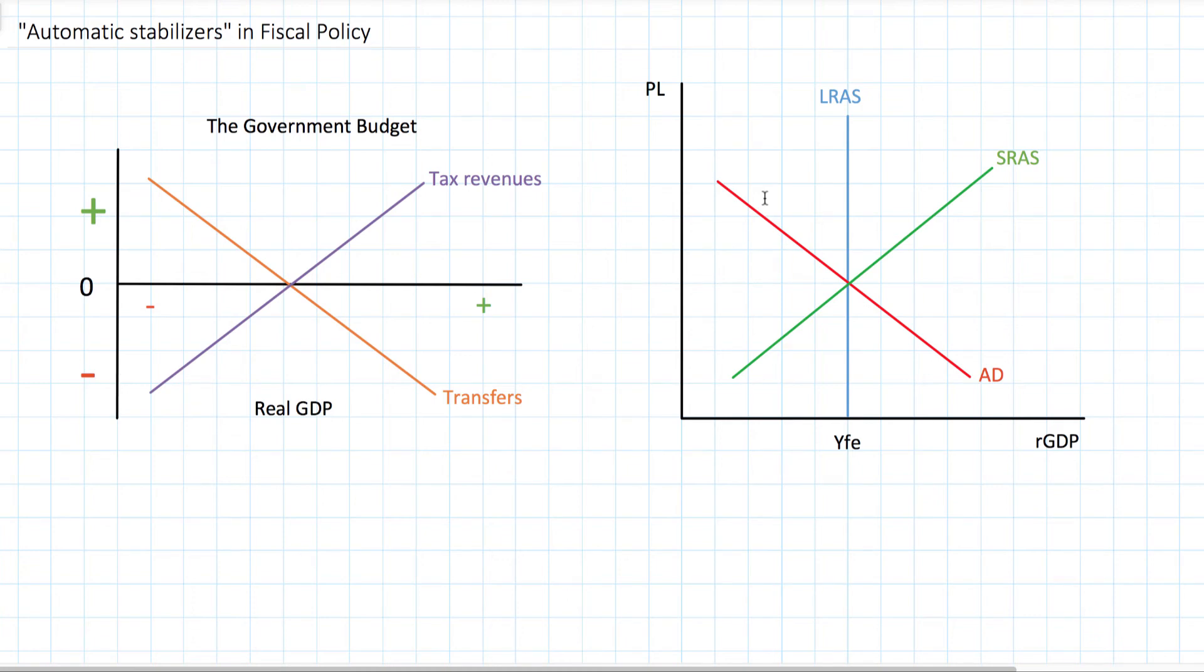However, this process of deliberation and debate and discussion could go on for months, sometimes even longer than that, before a government decides what it needs to do in terms of government spending and taxation in order to help achieve the macroeconomic objectives of full employment. Is there some kind of fiscal policy that happens more quickly, perhaps even automatically? And the answer is yes. We're going to be talking in this video about what's called automatic fiscal policy.